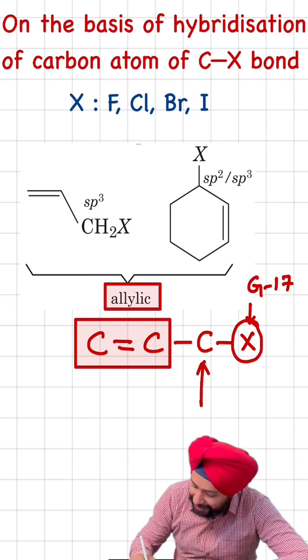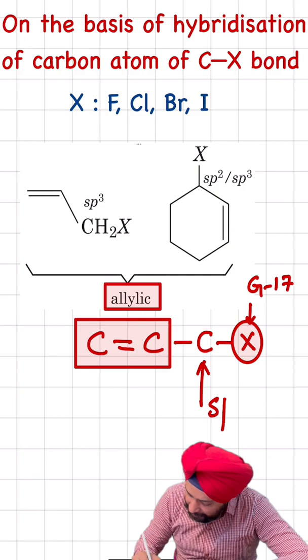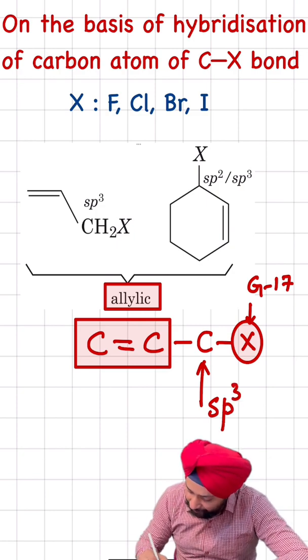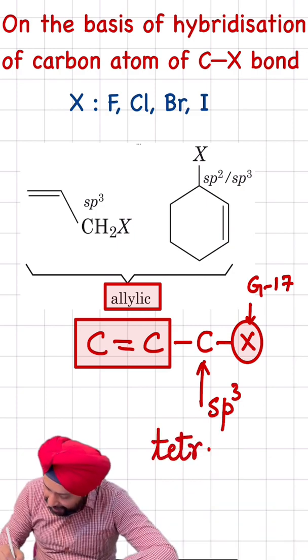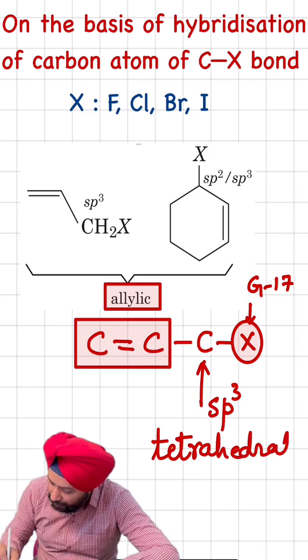In this case, this particular carbon which is directly attached with the halogen is sp3 hybridized, and we have a tetrahedral geometry around this particular carbon.